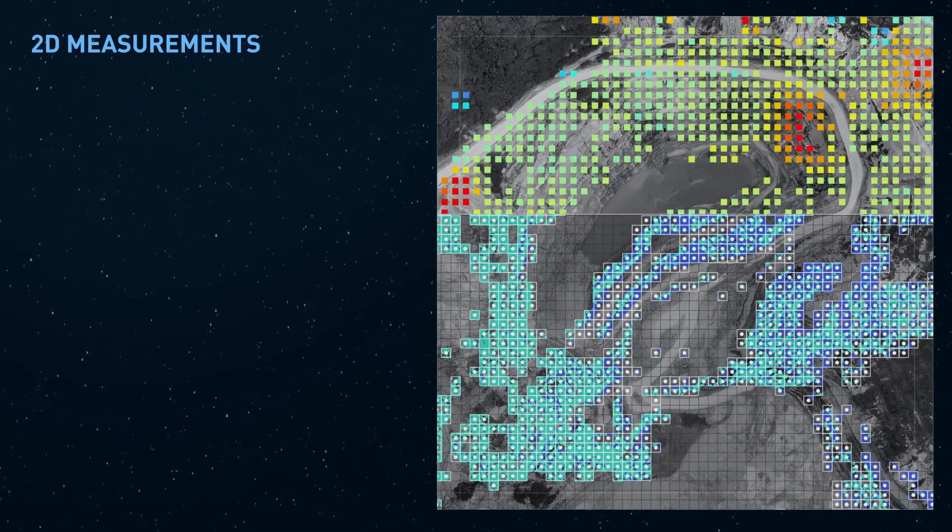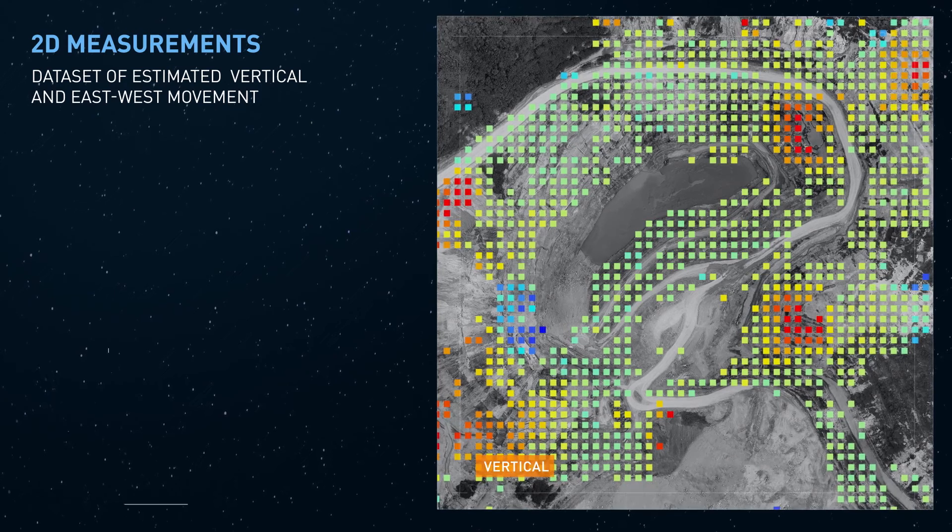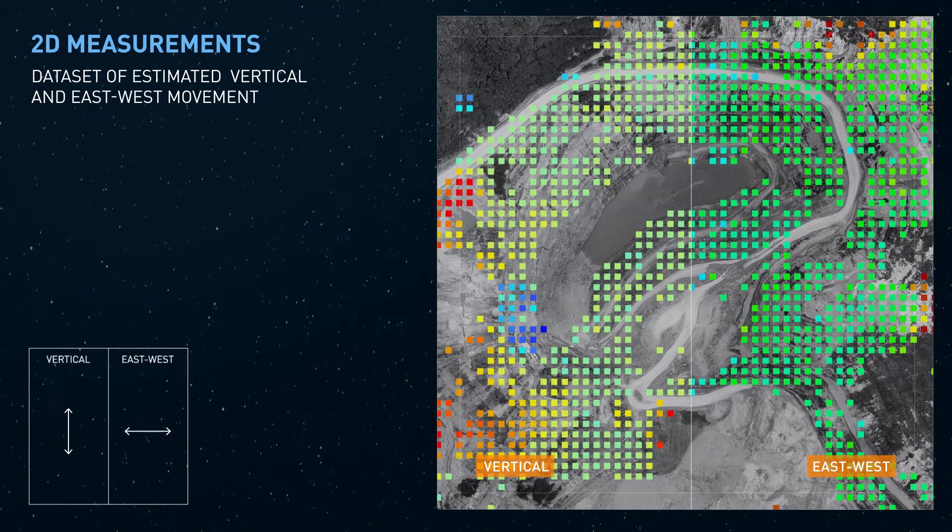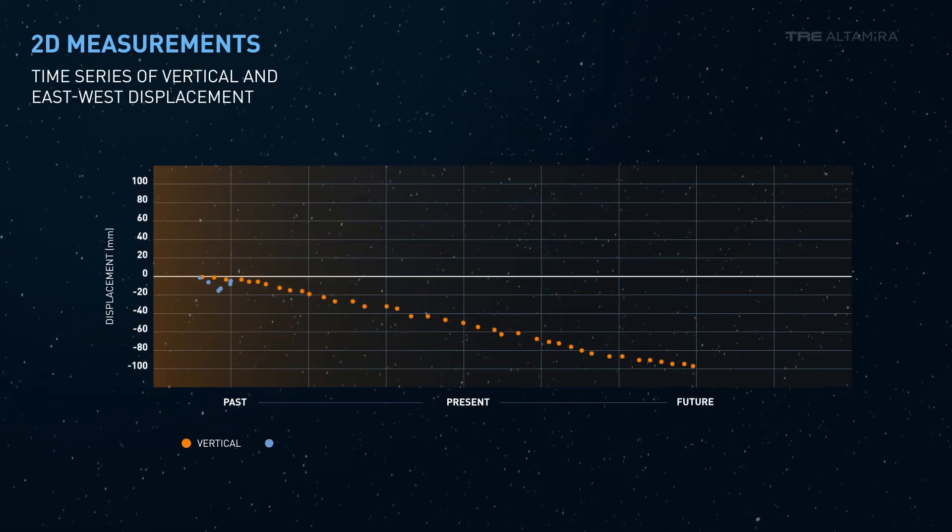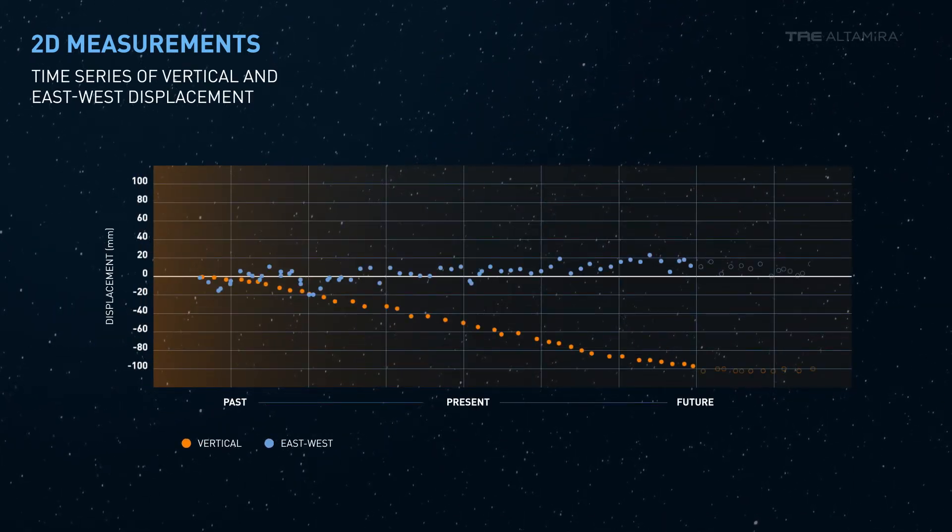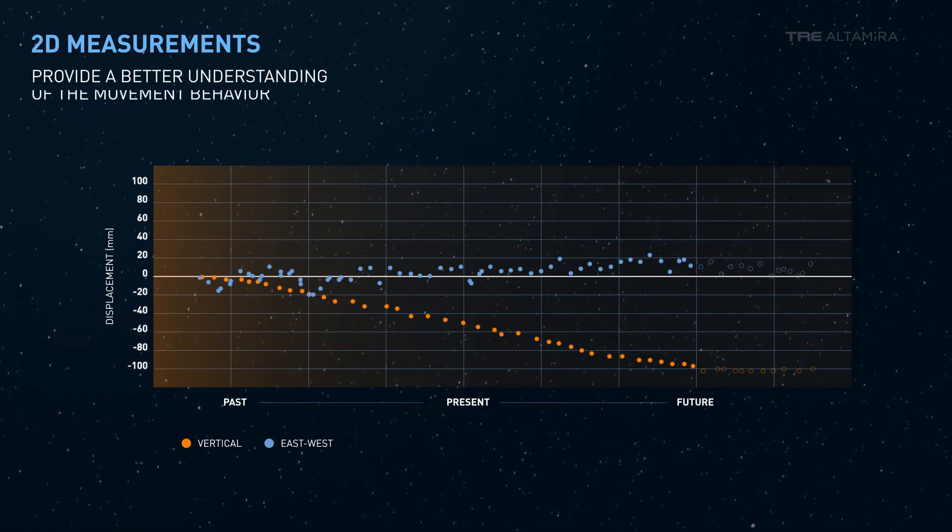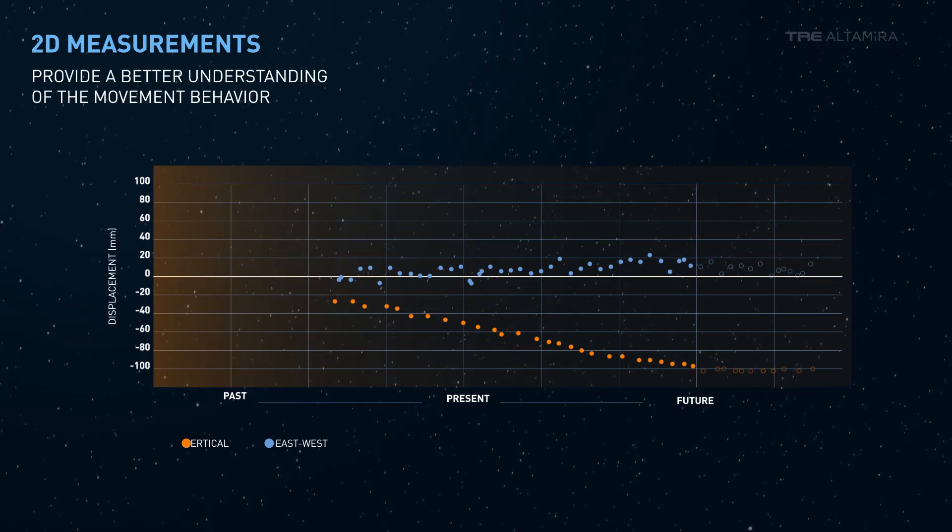The result is a dataset of estimated vertical and east-west movement. For each measurement point, it is possible to obtain a time series of both displacements. 2D measurements provide a better understanding of the movement behavior over time.